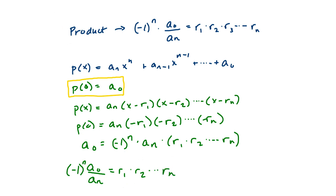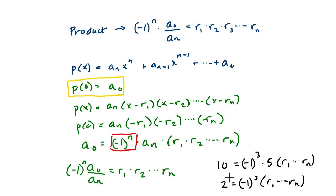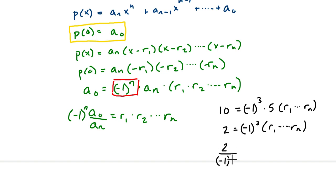Let me just reiterate that with a quick example. Say the constant term is 10, and we have negative one to the third power, and the leading coefficient is 5. Dividing both sides by 5 gives two equals negative one to the third, and negative one to the third is just negative one. So two divided by negative one to the third is two divided by negative one. Or equivalently, negative one to the third times two equals the product of the roots. This uses the idea that dividing by negative one to the n is the same as multiplying by negative one to the n. And that's the proof for the product.